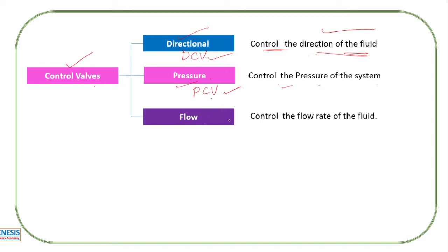The next type is the flow control valve, which controls the volume of the fluid — how much flow is restricted. This is mainly to control the speed: at what speed the cylinder has to move. If the cylinder has to move faster, we supply more flow (Q). Flow rate is controlled by flow control valves. So: direction, pressure, and velocity are the three things controlled. To master this subject you need good knowledge of control valves.